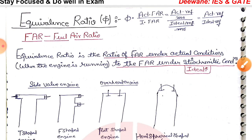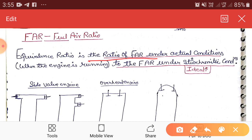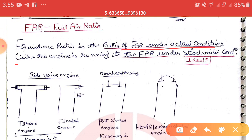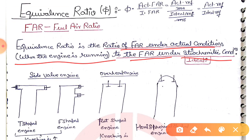The equivalence ratio is the ratio of the fuel-air ratio (FAR) under actual conditions to the fuel-air ratio under stoichiometric (ideal) conditions. It is expressed as: equivalence ratio = FAR actual / FAR stoichiometric.